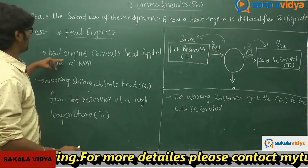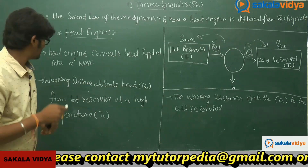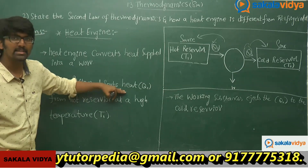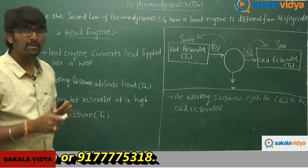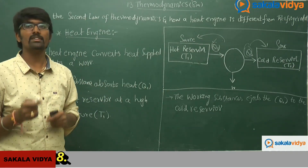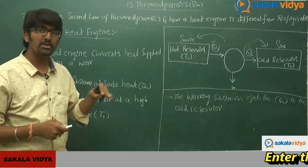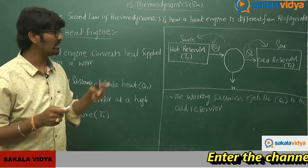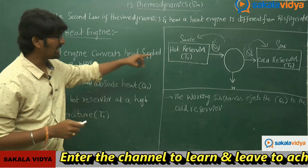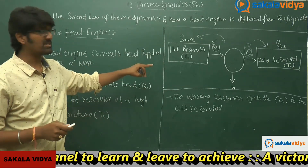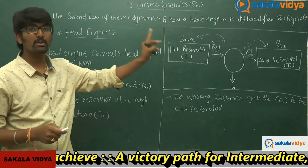To summarize the heat engine: it converts the heat supplied into useful work. The working substance absorbs heat Q1 from the hot reservoir at T1, some internal work is done in the working substance, and then the working substance ejects or rejects heat Q2 to the cold reservoir or sink. The direction of heat flow is from hot reservoir to working substance, and from working substance to the cold reservoir.